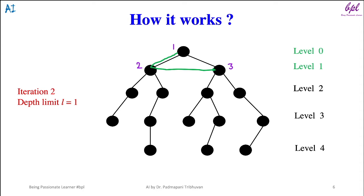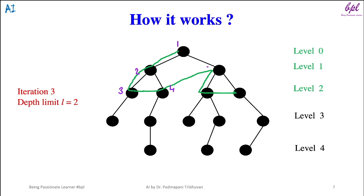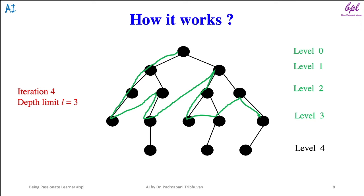If the goal node is found, the algorithm will terminate. If not found, the depth limit will be increased by one. In the third iteration, depth limit is two and nodes will be explored in that sequence. If goal node is found the algorithm terminates; if not, the depth limit is increased by one. In the fourth iteration, L will be three and nodes will be explored in that sequence.